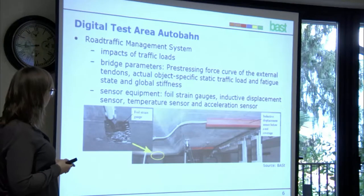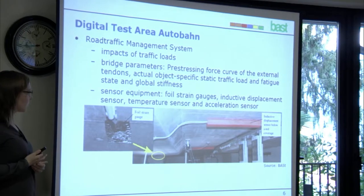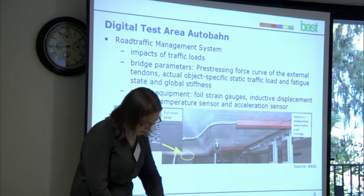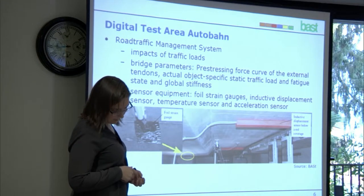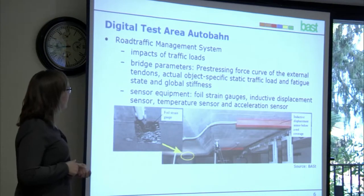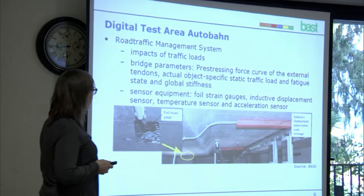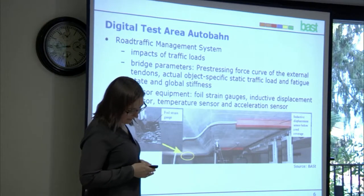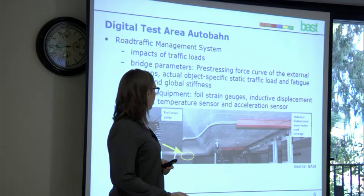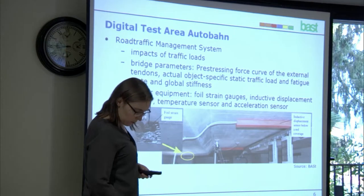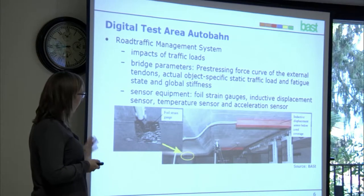Detection of the impact of traffic loads is possible using calibration during load tests. After calibration, the system can detect the number of vehicles, vehicle speed, axle distance, dynamic axle load per single axle, and total weight of the vehicles. The pre-stressing force curve of the external antennas can also be detected. Additionally, the actual fatigue state can be detected using different sensors with data processing and a bridge-specific model.